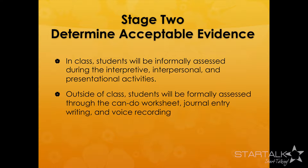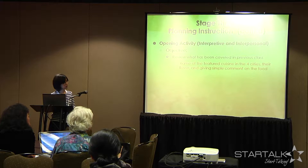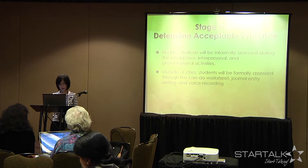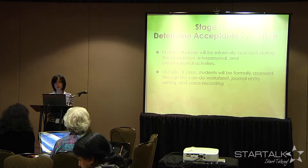For stage two, the evidence of assessment: students will be informally assessed through classroom activities, and outside of class, students will be formally assessed through a can-do statement sheet, journal writing, and voice recording. We use a website called KidBlog. If you use it by yourself with only one teacher and any number of students, it's free. But we use it for several teachers, so we pay only five dollars for one month — very affordable for a summer program.